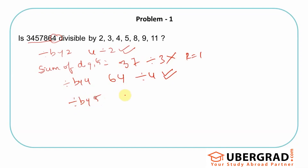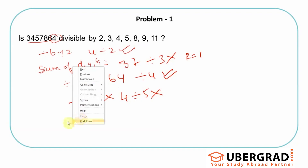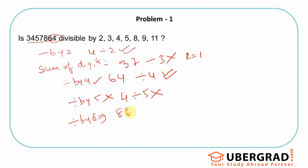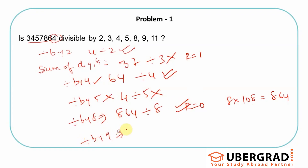For 5: the last digit is 4. Is 4 divisible by 5? No, so it is not divisible by 5. For 8: look at the last 3 digits, which are 864. 864 divided by 8 = 108 exactly, remainder 0, so it is divisible by 8. For 9: sum of digits is 37, which is not divisible by 9 — remainder is 1 — so it is not divisible by 9.